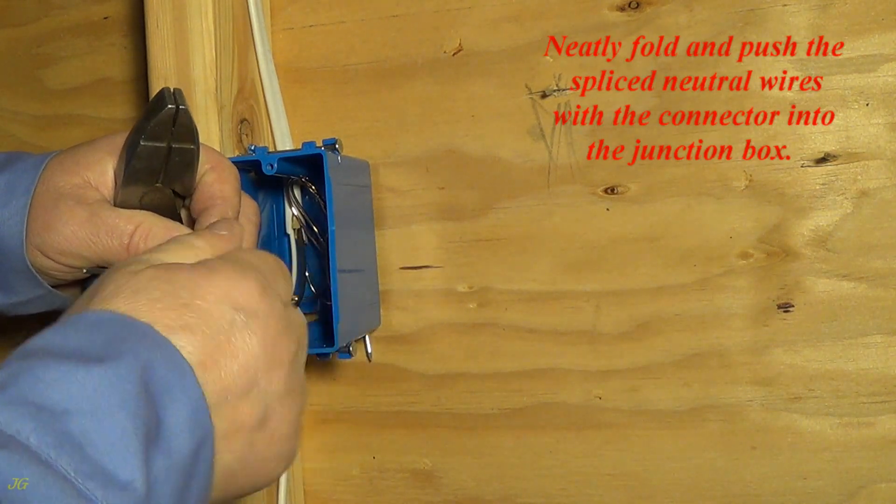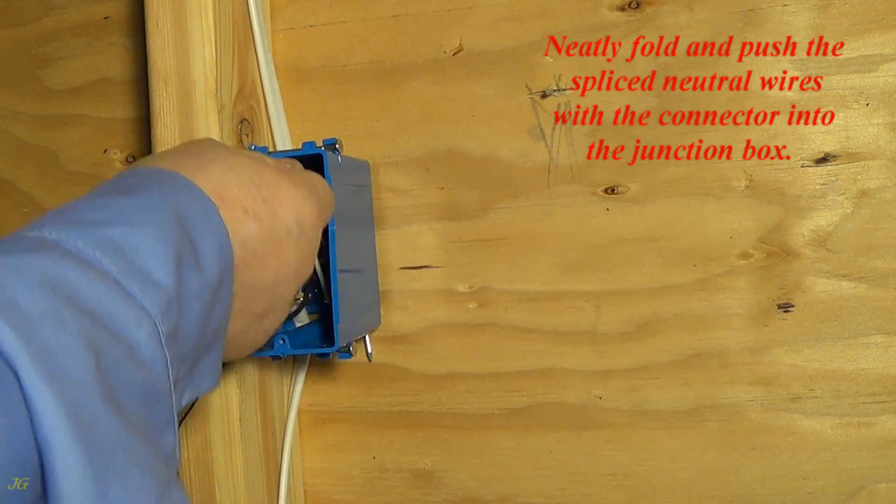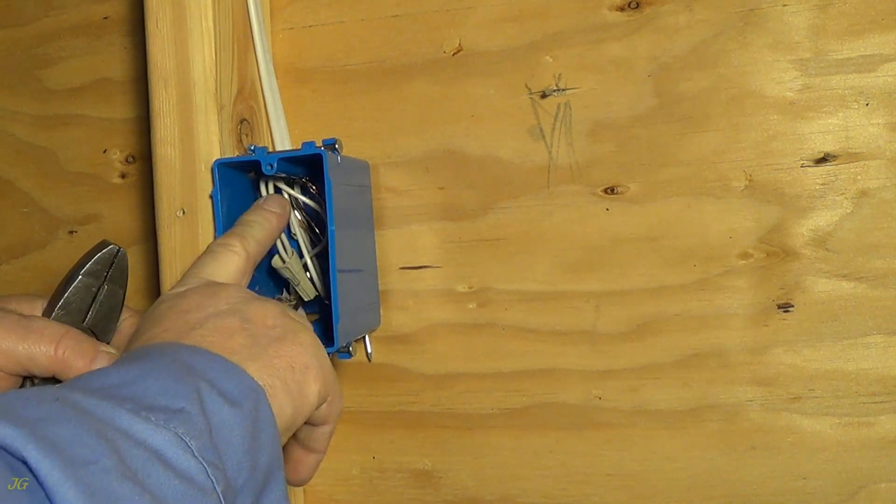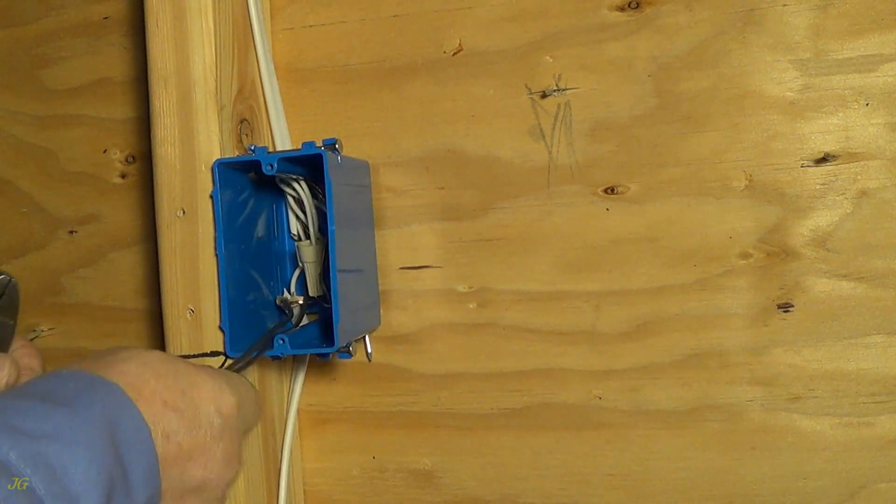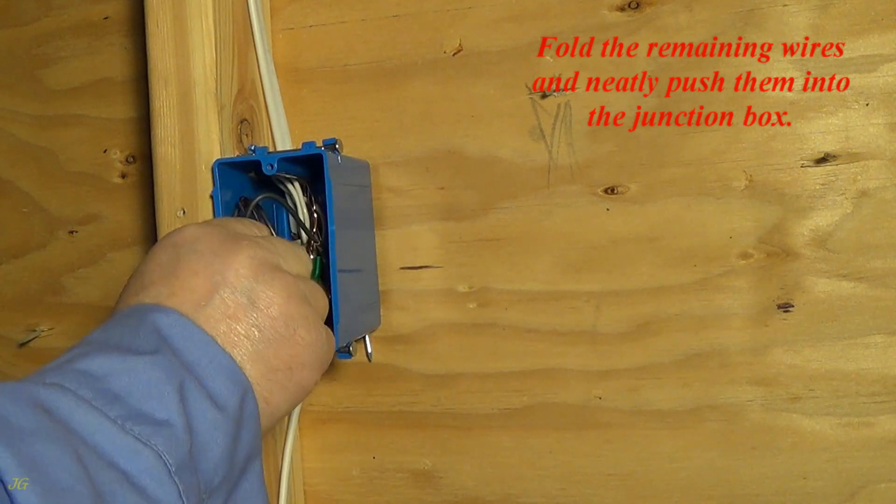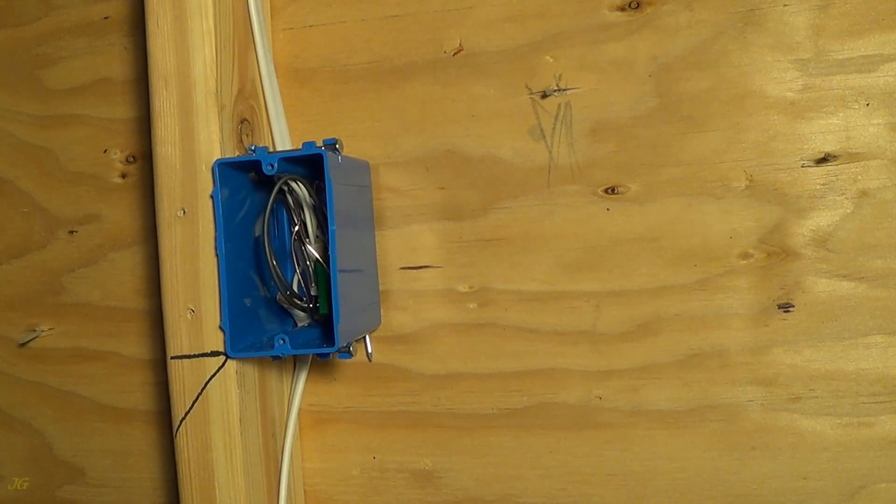Neatly fold and push the spliced neutral wires with the connector into the junction box. Fold the remaining wires and neatly push them into the junction box.